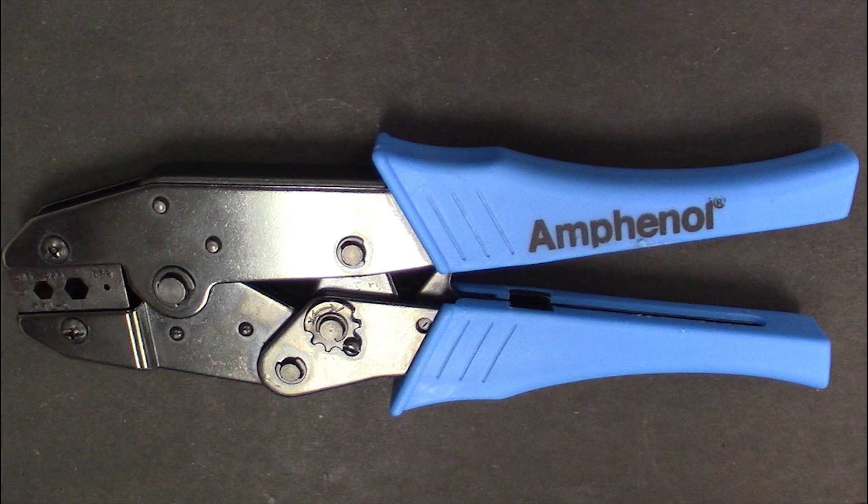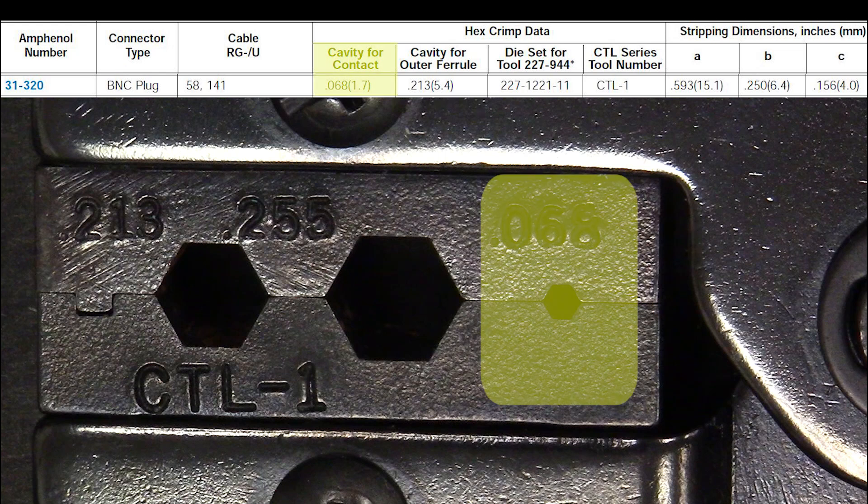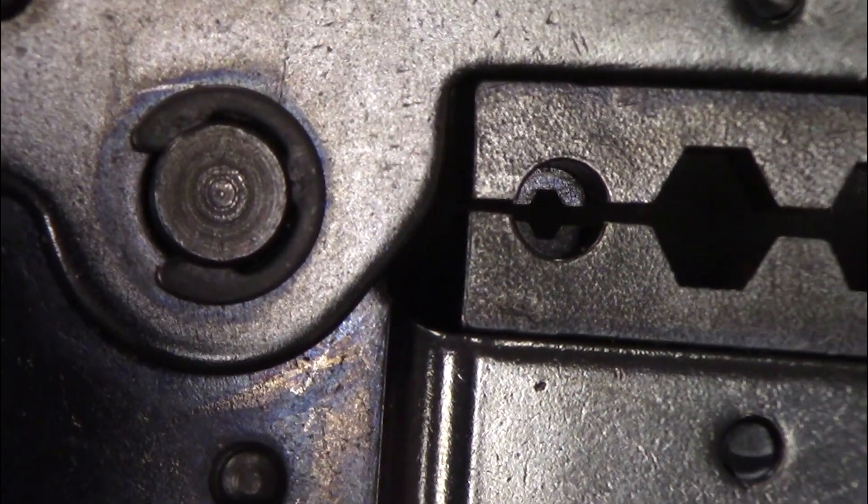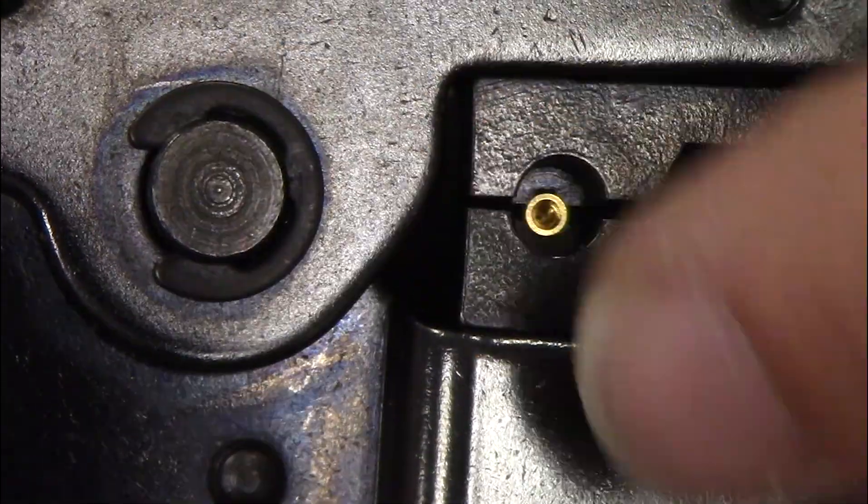We will show two methods for securing the male contact to the center connector. First, we'll use the Amphenol crimping tool with the CLT-1 die inserted. The data sheet indicates a .068 inch hex crimp.